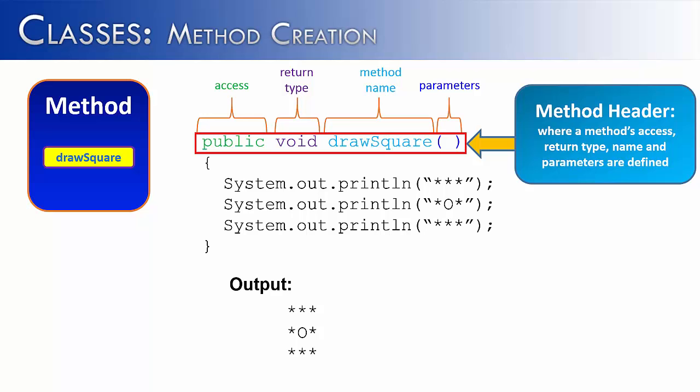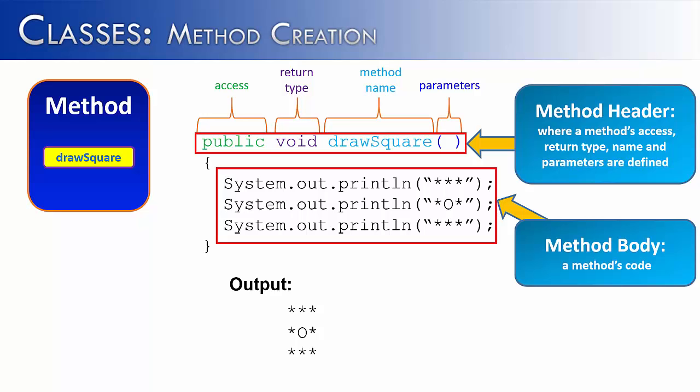So public void drawSquare parentheses is the method header. The other part of the method is the method body, and that is simply just the method's code, or what the method is doing. Next, I want to break down each part of the method header and give you an idea about what each part does.